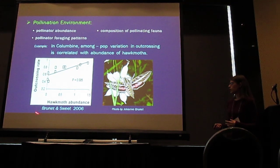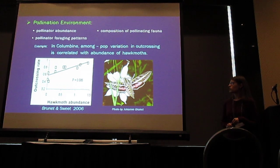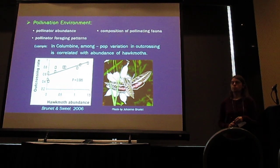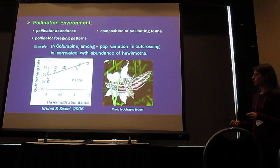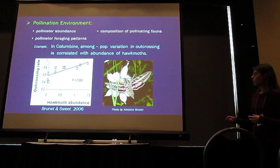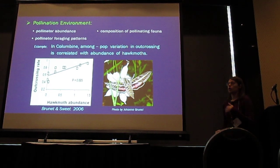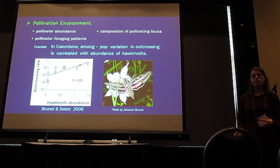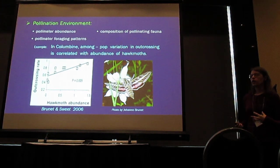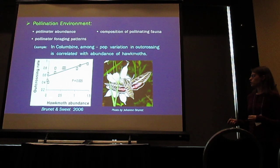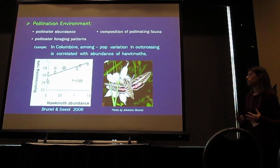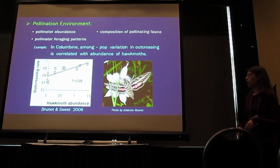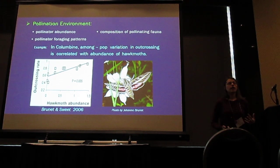As an example, Brune and Sweet found that in Columbine populations, among-population variation in outcrossing is correlated with the abundance of hawkmoths. In their figure, the x-axis is hawkmoth abundance, the y-axis is outcrossing rate, and each point represents a population of Columbine. In populations where hawkmoths are more abundant, these primarily have a higher outcrossing rate, while in populations where hawkmoths are more rare, these tend to have a lower outcrossing rate and therefore a higher selfing rate.